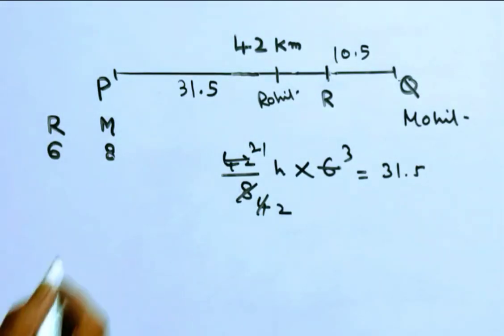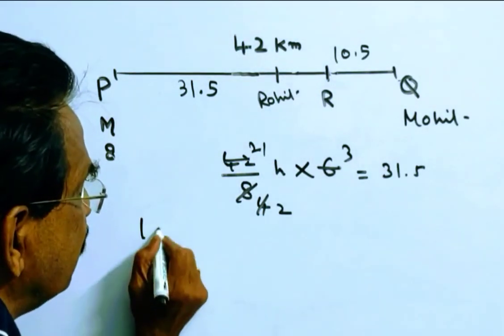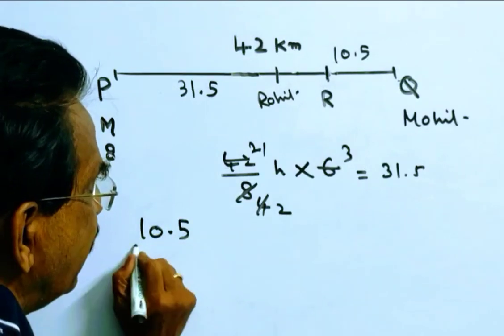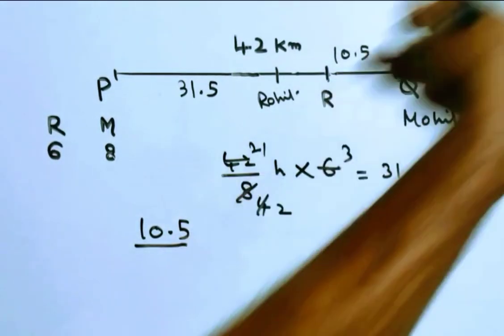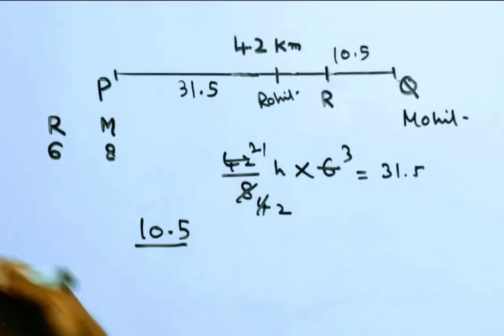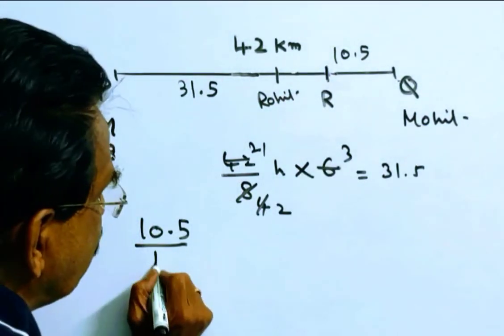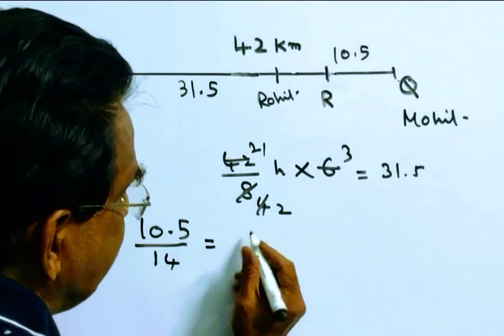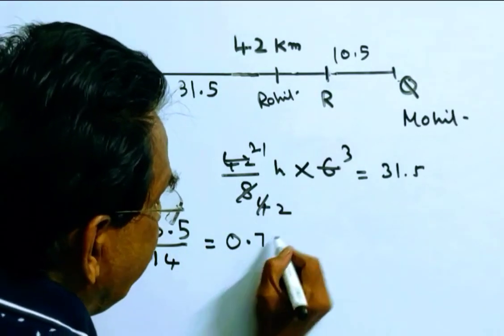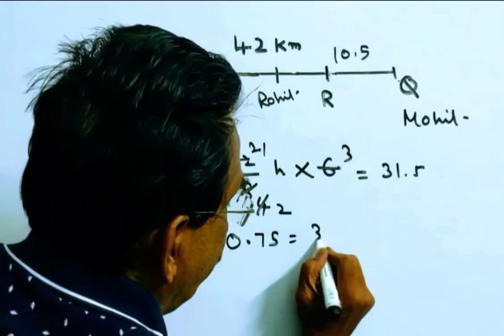Friends, now this 10.5 km is covered in how many hours? Distance by relative velocity. Friends, Mohit comes in this direction and Rohit is going in this direction. So relative velocity is 14, 6 plus 8, giving 0.75 hours, that is 3 by 4 hours.